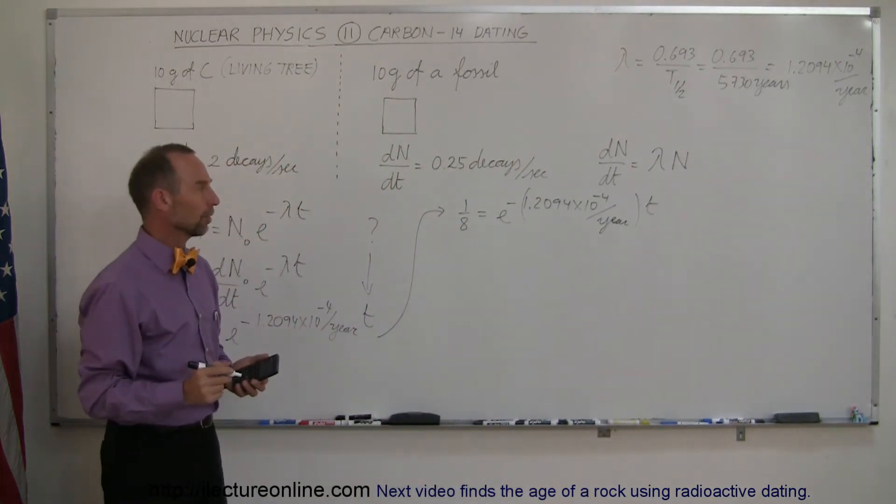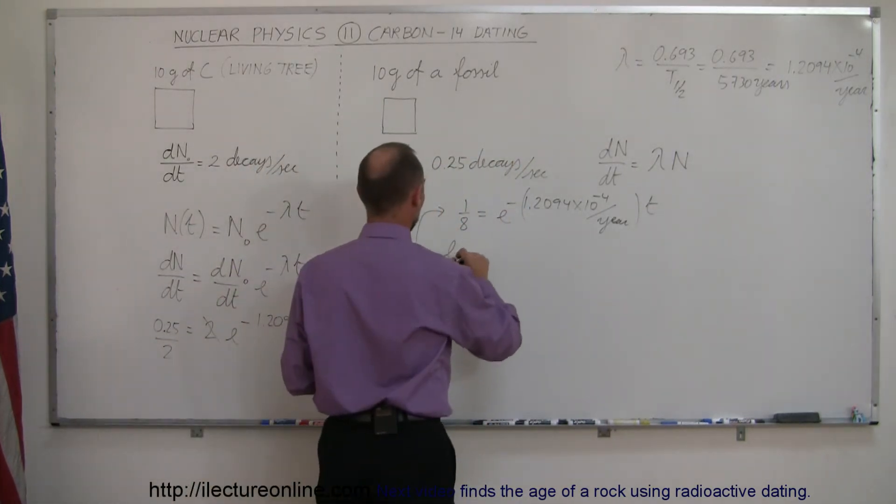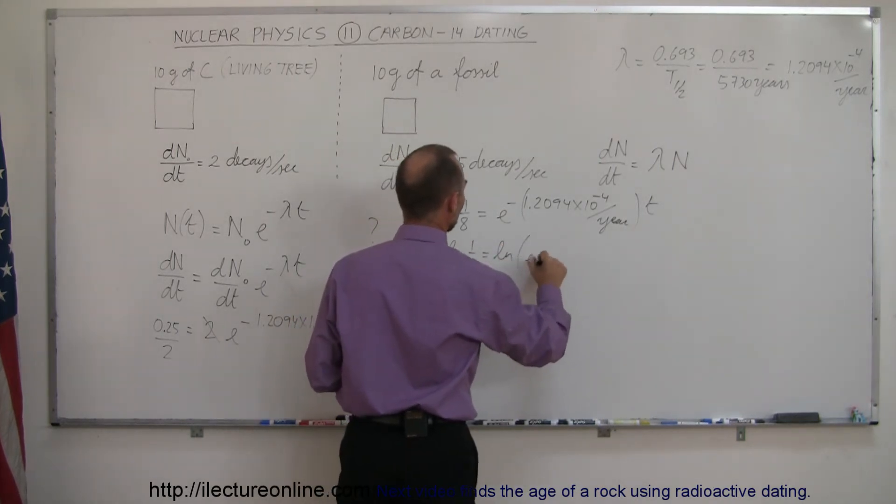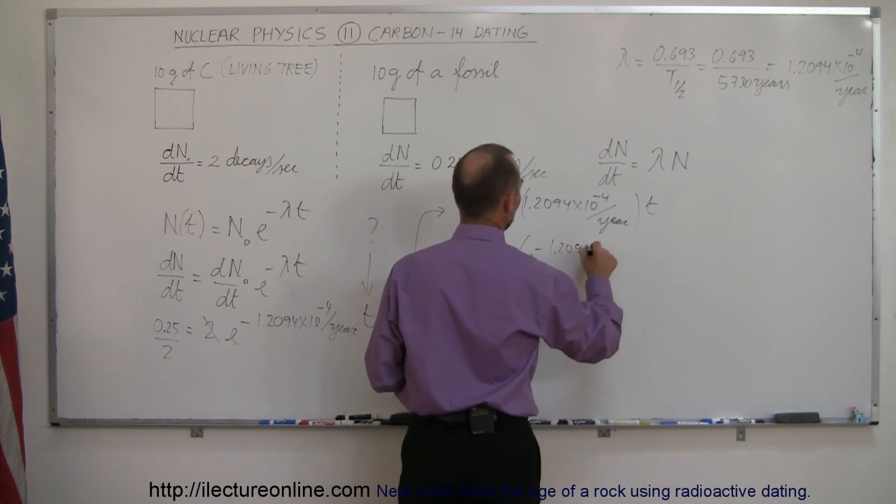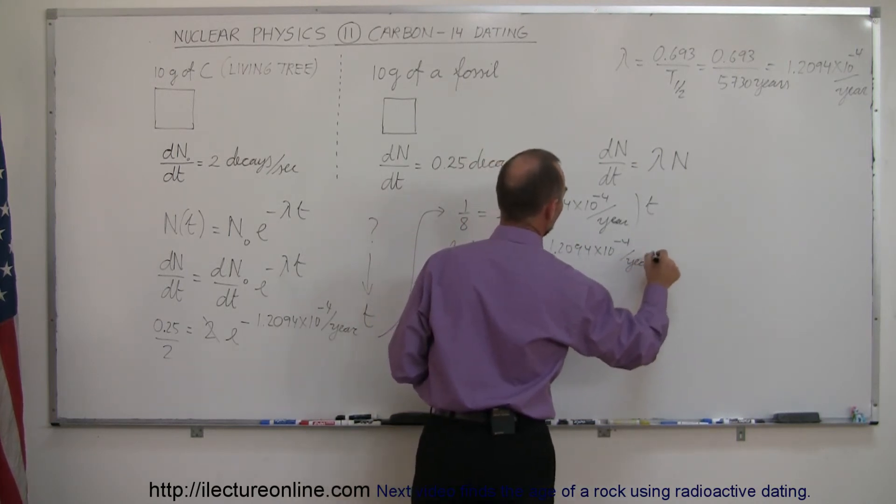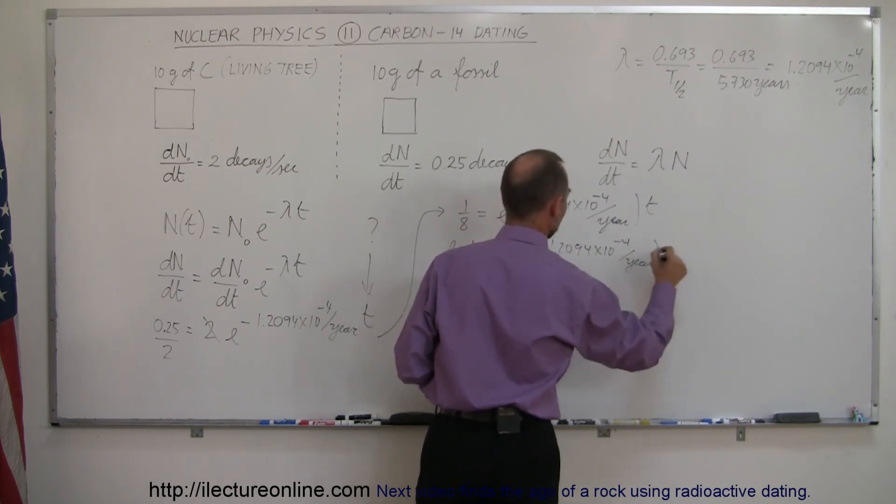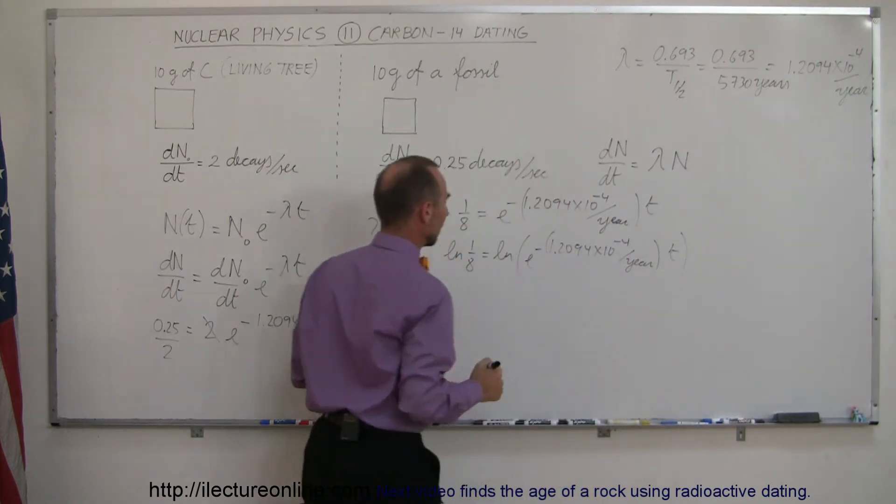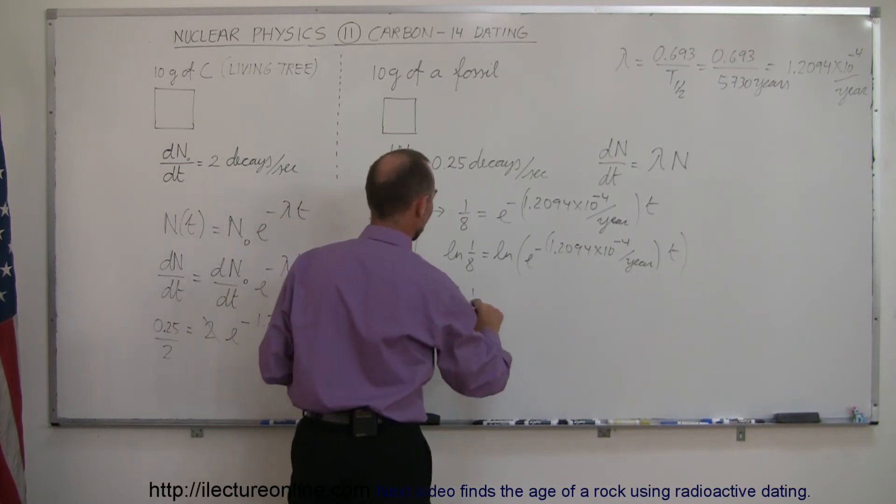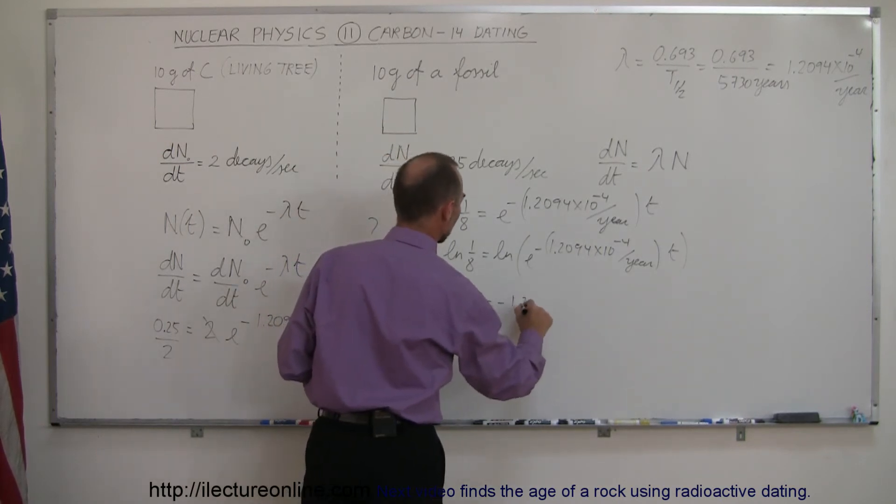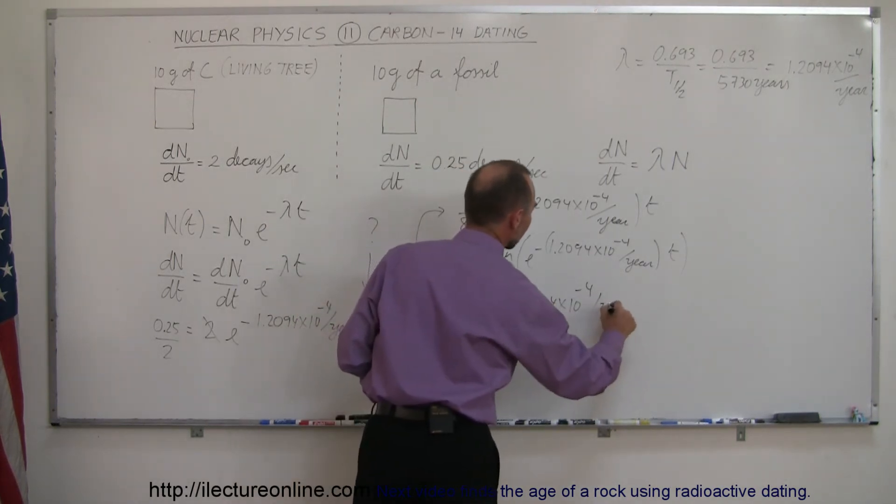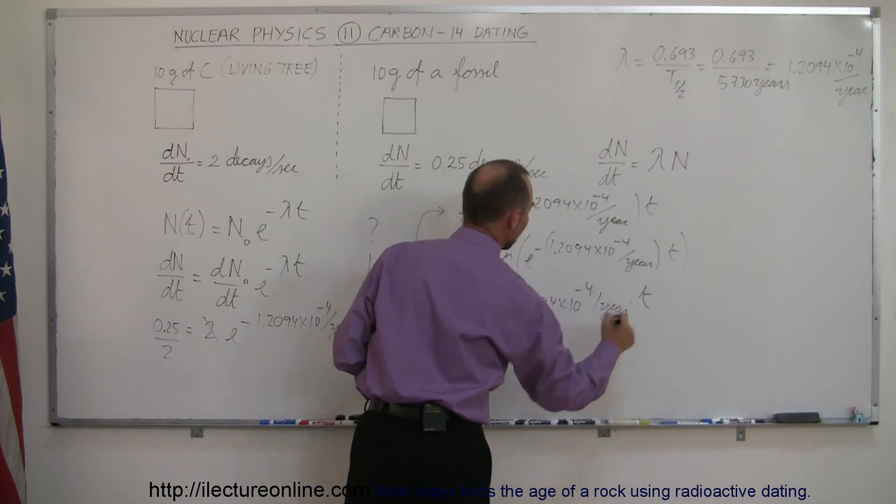Now, of course, we're going to take the natural log of 1/8 is equal to the natural log of e to the minus 1.2094 times 10 to the minus 4 per year times t. And this will negate that, so we have the natural log of 1/8 is equal to minus 1.2094 times 10 to the minus 4 per year times t.